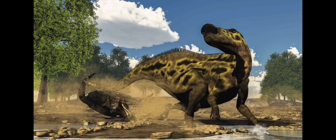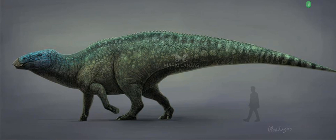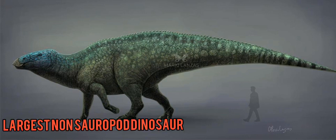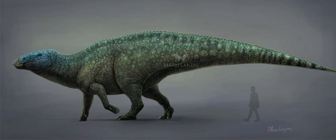Once Shantungosaurus reached full adulthood, it essentially had no predators. The only predator around that we have discovered is the local tyrannosaurid, but even for that tyrannosaurid, a fully grown Shantungosaurus would be a very big challenge — to the point where it could not even beat it.